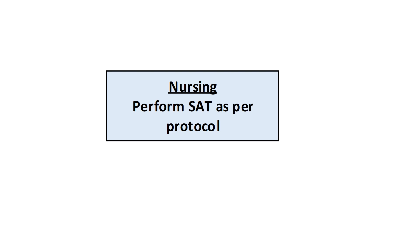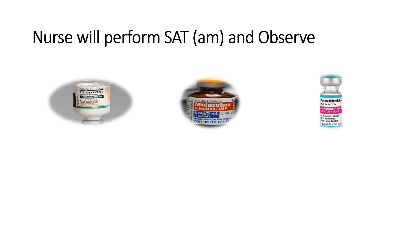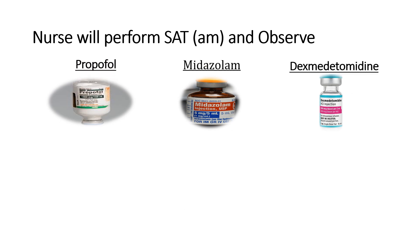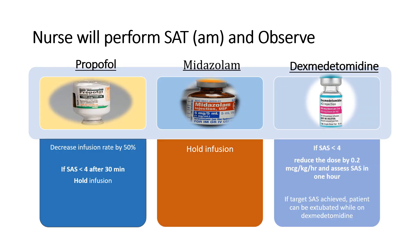The nurse will perform SAT as per protocol. If the patient is getting sedation like propofol, midazolam, or dexmedetomidine (Precedex), the following applies: if getting propofol, decrease it by 50% — so if getting 100 mg/hour, it becomes 50 mg/hour. If getting midazolam, stop it immediately. If getting Precedex and SAS is less than 4, reduce it by 0.2 mcg/kg/hour and assess in 1 hour. Then assess the patient after 30 minutes; if SAS is still less than 4, hold the propofol entirely.